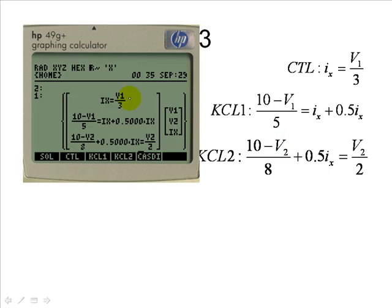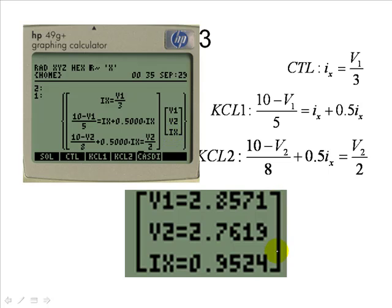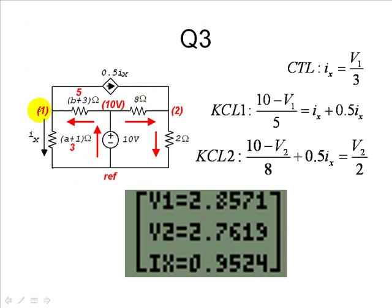Like so. The control equation, K-cl1 and K-cl2. We ask the calculator to solve for V1, V2 and IX. We push a key and we get the solutions. Now we know what is the voltage of V1 with respect to the reference, V2 with respect to the reference, and even the control current IX is known. Shy of one amp, flowing downwards.